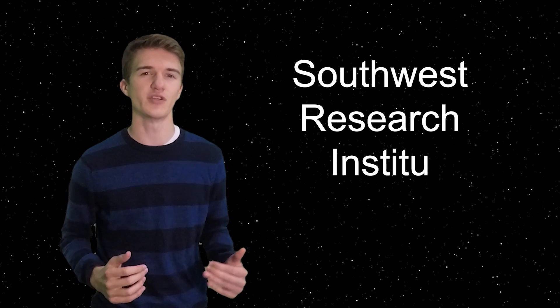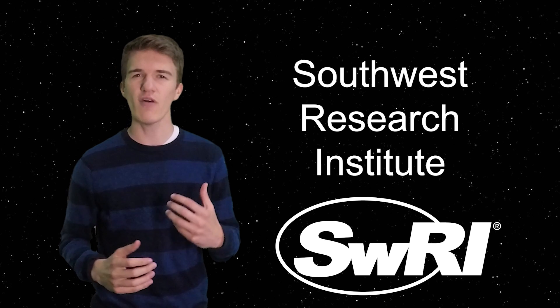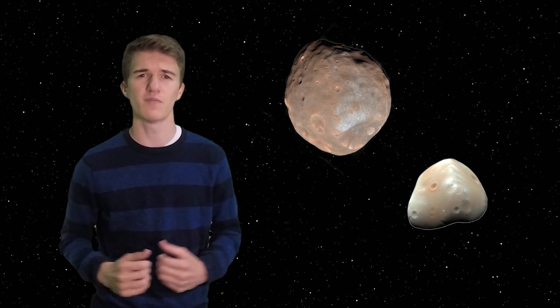In recent news, scientists at the Southwest Research Institute have found evidence towards how the Martian moons Phobos and Deimos might have formed. In addition, it turns out they might have actually formed in a similar way that our own moon did around Earth. Let's talk about that.